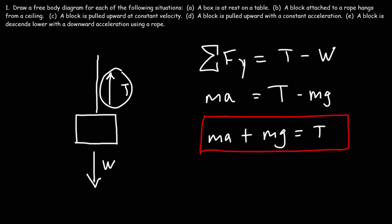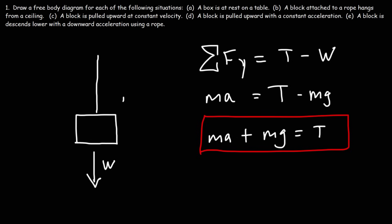Because tension is greater than mg, this arrow has to be longer than the arrow for the weight force. If T is bigger than W, there's going to be an upward net force that's going to accelerate the block upward.